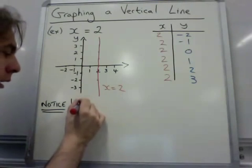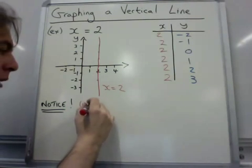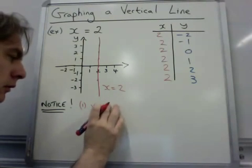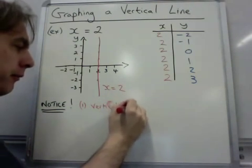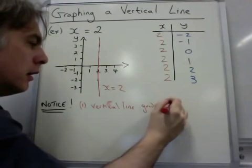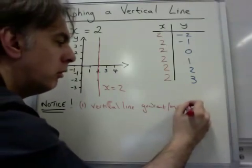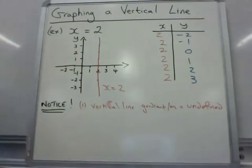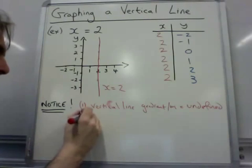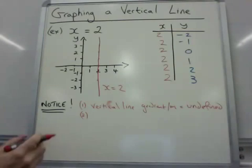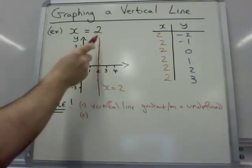Here we go. This time we have a vertical line. That means that the gradient, the m value, is what we call undefined. There is no number that exists to describe it. Secondly, do we have a y-intercept? Does this line cut the y-axis? No, there's no y-intercept.